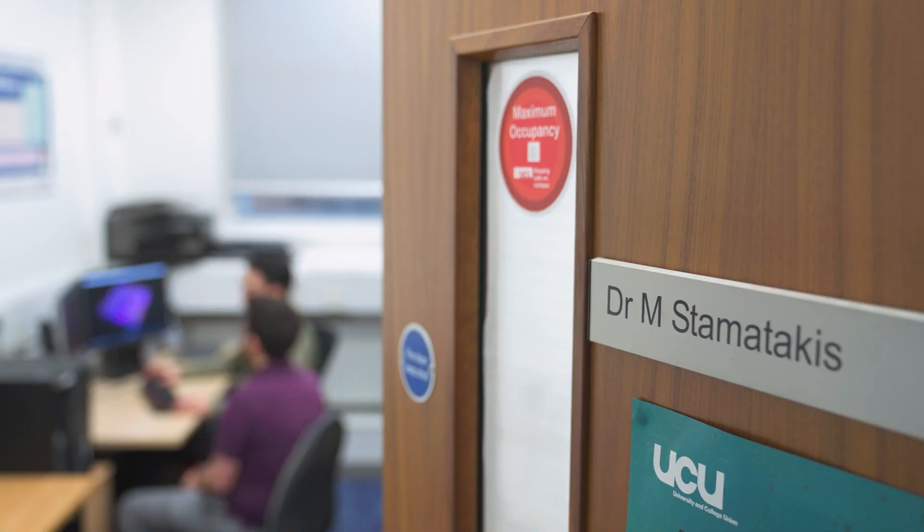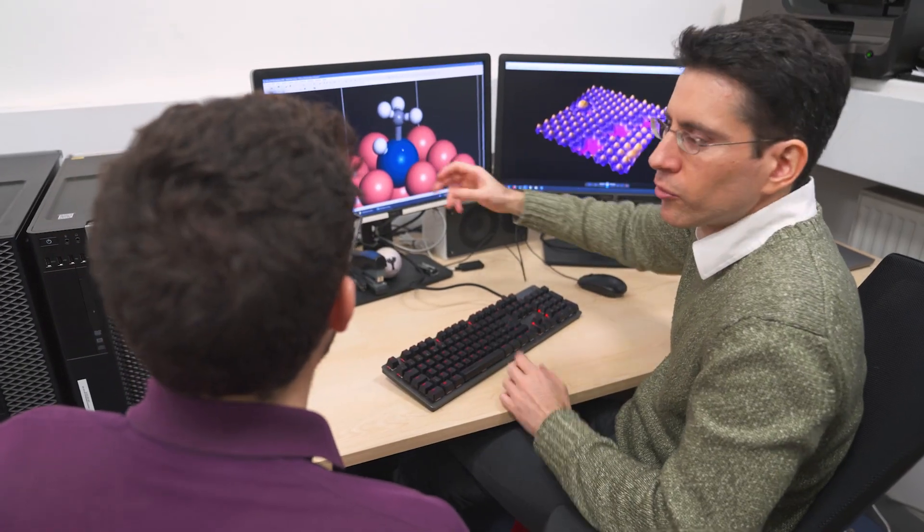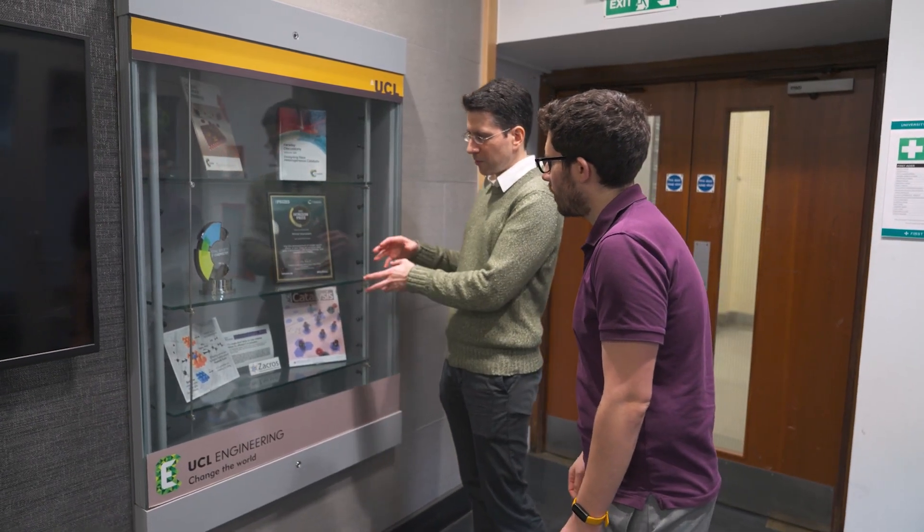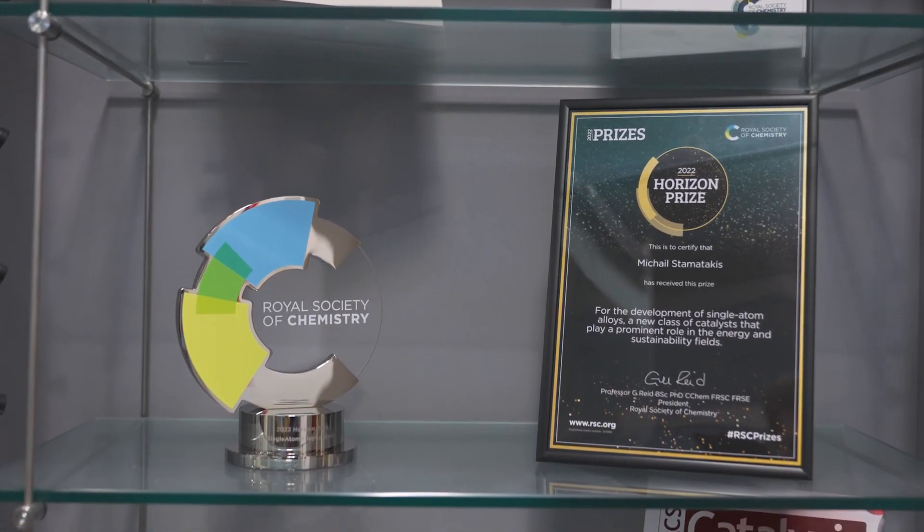We use chemicals all the time in everyday life, for example things like pharmaceuticals, plastics, and fuels. These are all chemicals that are manufactured in the chemical industry, and the problem with these manufacturing processes is that they often release quite a lot of carbon dioxide into the atmosphere. So it's a big challenge in terms of sustainability to reduce the carbon footprint of these manufacturing processes.